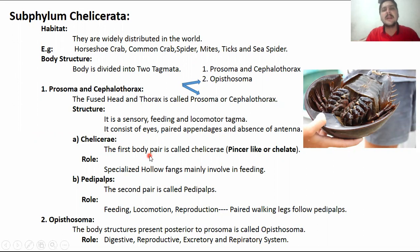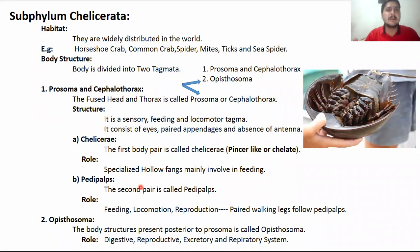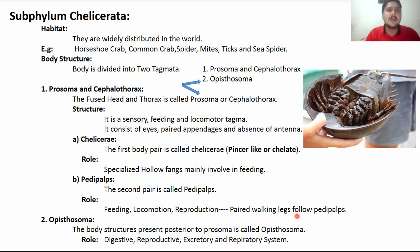The chelicerae are the first body structure — pincer-like or chelate-like jaws used for cutting food, such as biting or cutting prey. They are specialized hollow fangs mainly involved in feeding. The second structure in the cephalothorax or prosoma region is the pedipalps — the second pair of appendages. Pedipalps are used for feeding, play a role in locomotion, and also play a role in reproduction. The paired walking legs follow the pedipalps and provide locomotion.